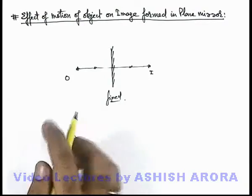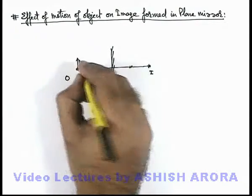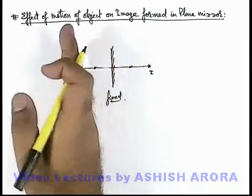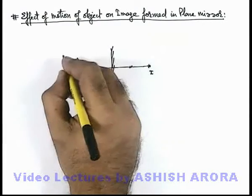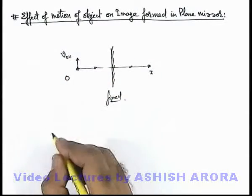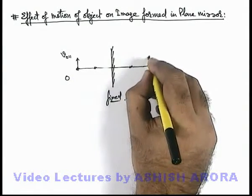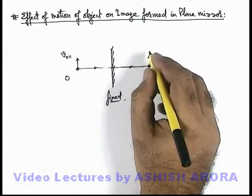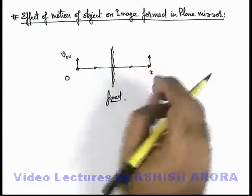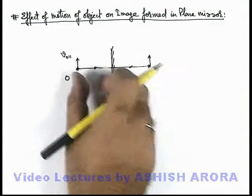Now say in this situation, if the object starts moving in a direction parallel to the plane of the mirror with a velocity v_o parallel, then obviously by symmetry we can see that the image will also start moving in the direction parallel to the mirror, as it is always located at the same distance behind the mirror at which the object is.